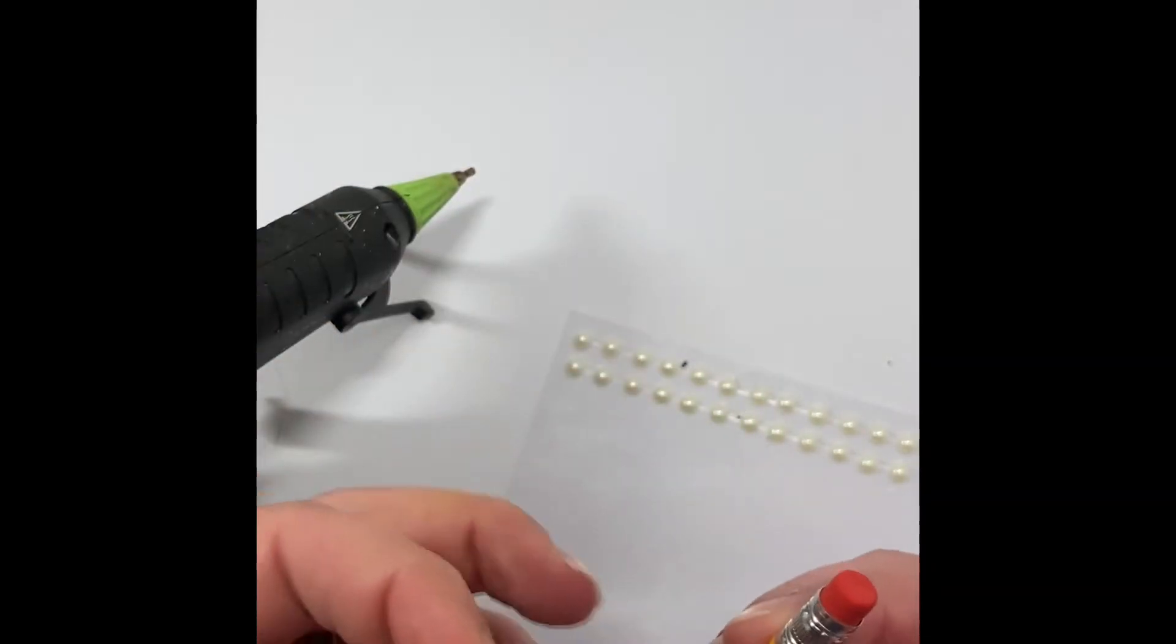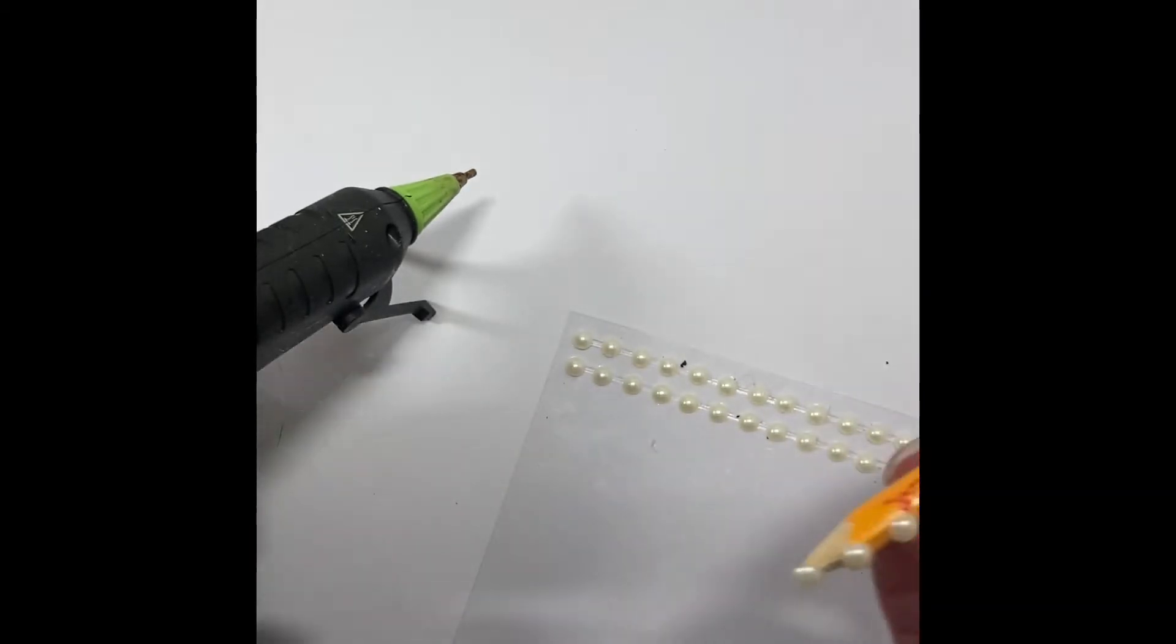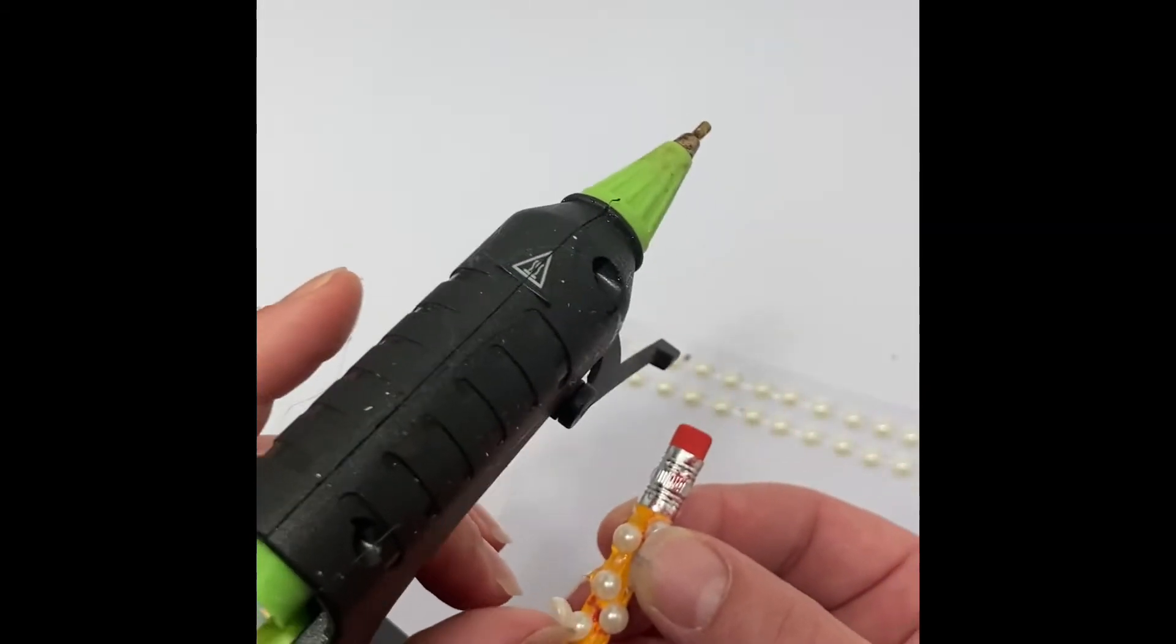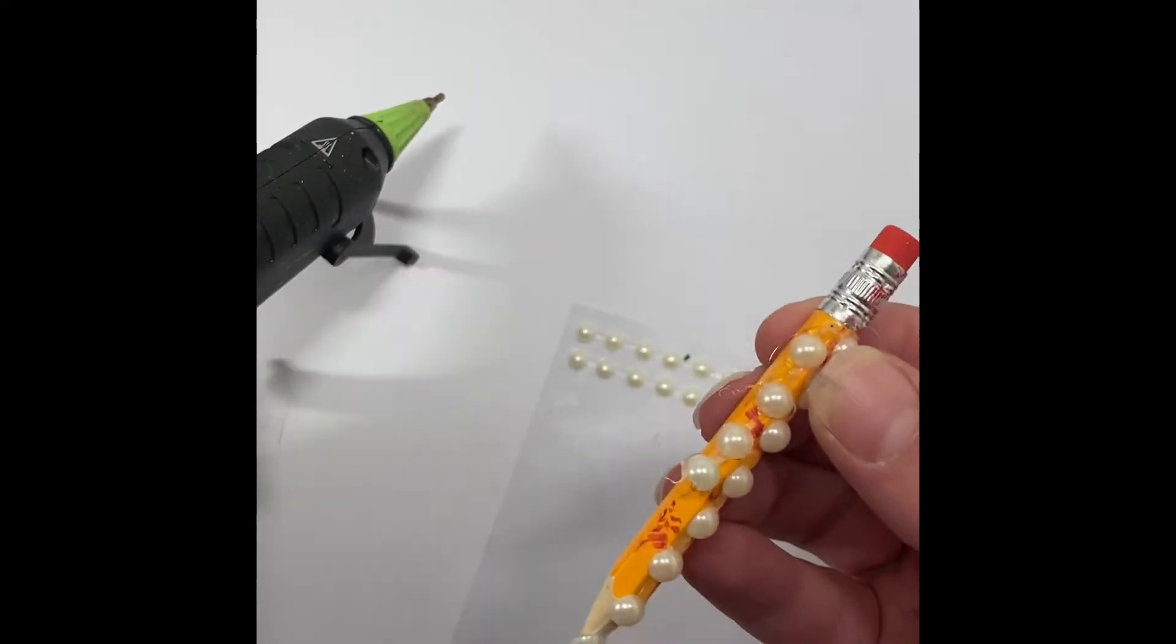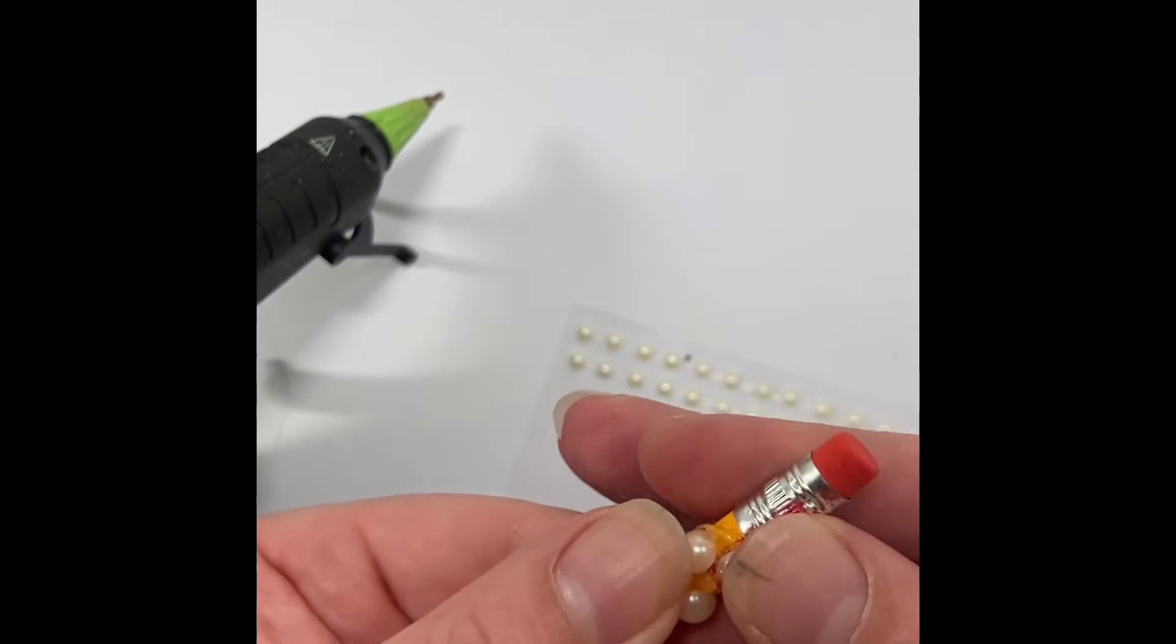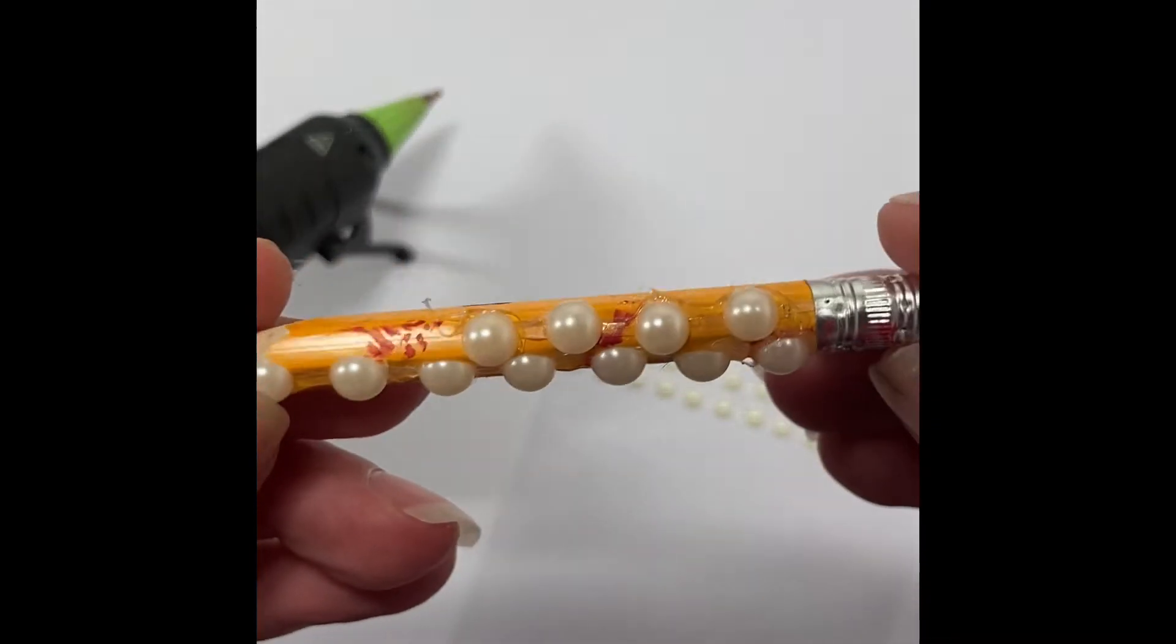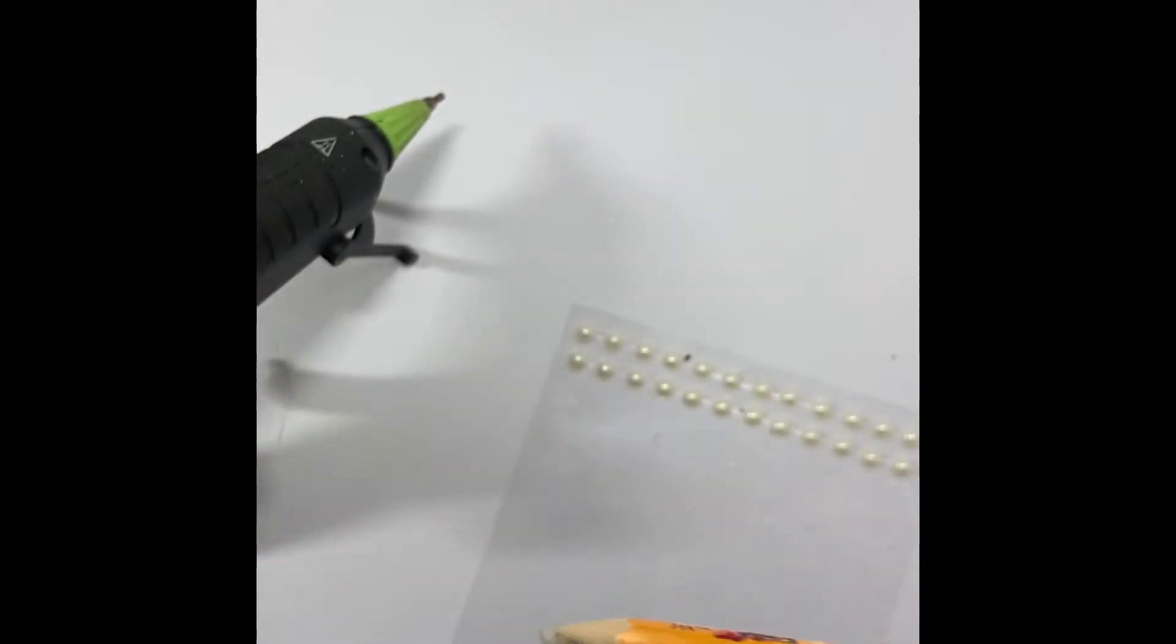Then we're going to take the hot glue and run it up the length of the pencil all the way to where the lead is. Incidentally, if you've got a lot of lead showing, you don't want this to be like a super sharp point. So go ahead and break the lead off or scribble it down until it's pretty much flush with the wood.